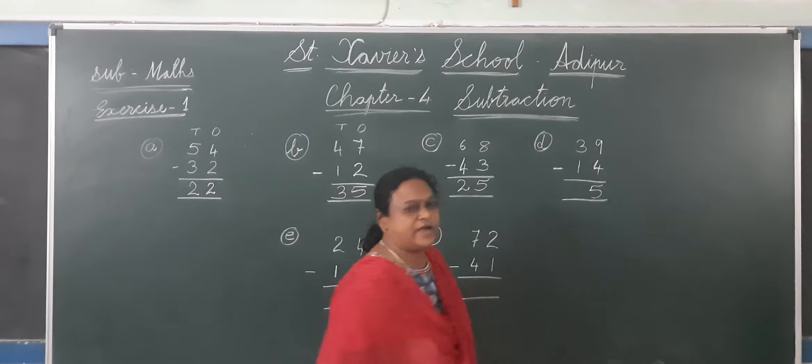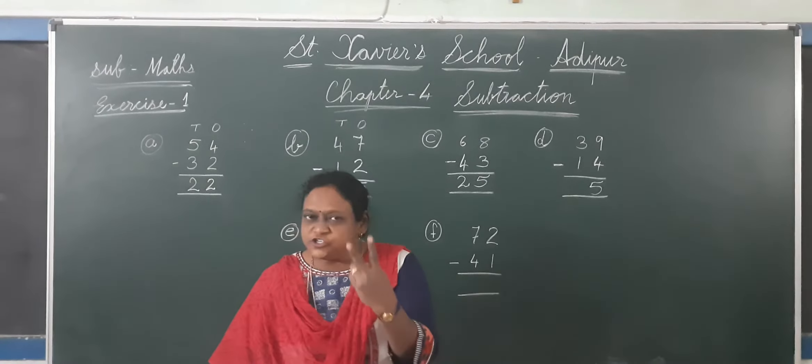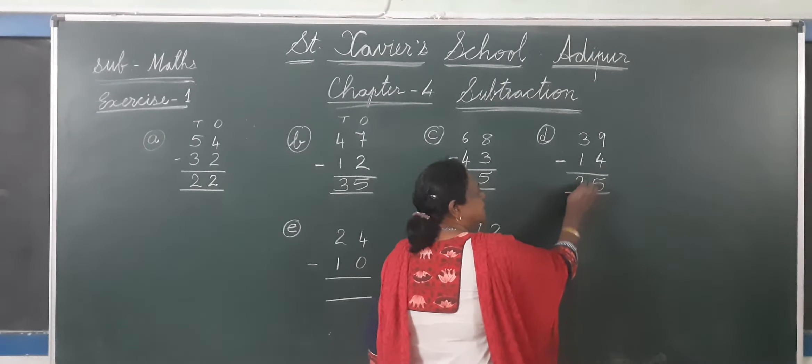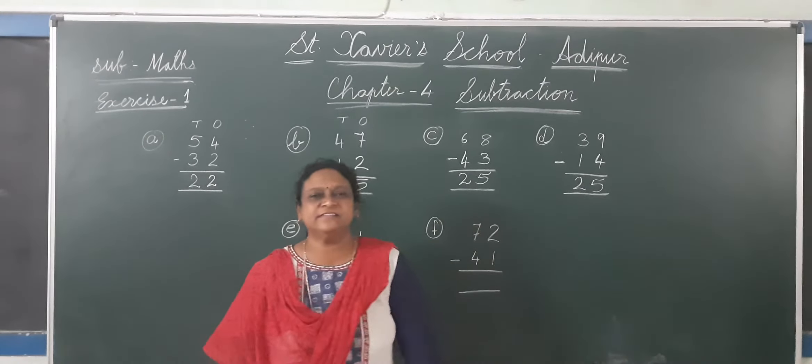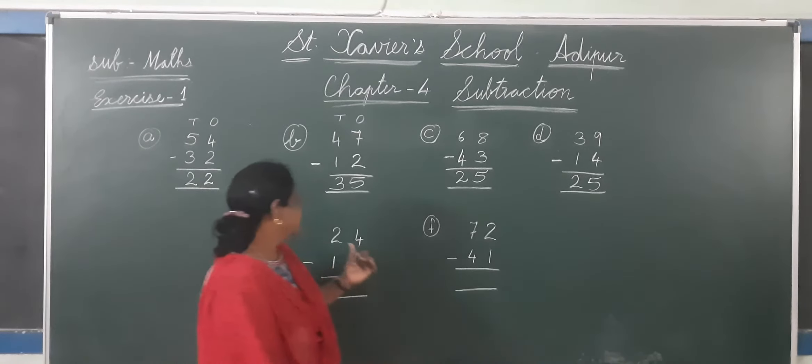Now 3 minus 1. 3 fingers. Minus 1. Remaining is 2. Addition me bhi hamne fingers count kiye the. So now you know.